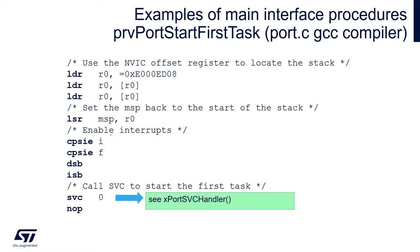The next step is to unblock all interrupts by clearing the PRIMASK bit - if it is set to 1, only the hard fault and NMI interrupts could be executed - and clearing the FAULTMASK bit. The next two instructions are so-called barrier instructions, which guarantee that all current data and instruction bus operations will be finished before the next instruction. All interrupts below this line can be visible. The next step is to call the SVC interrupt, which starts the operating system.